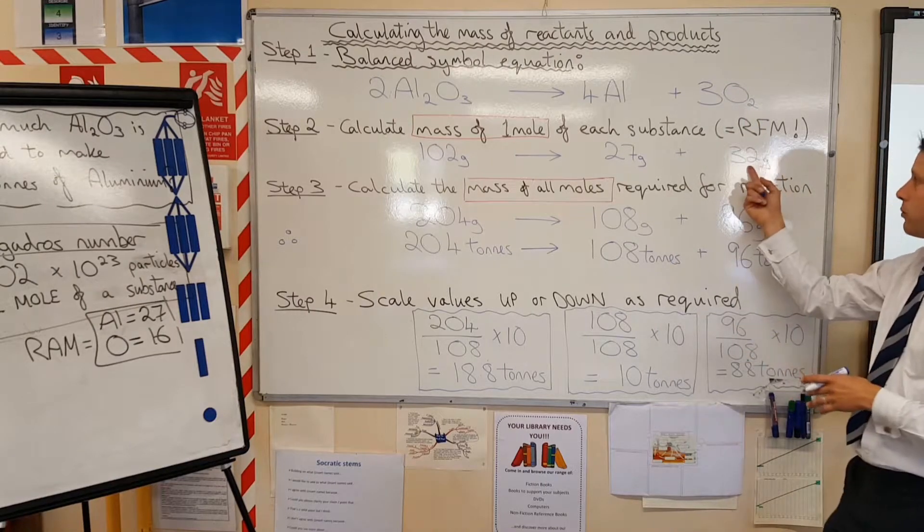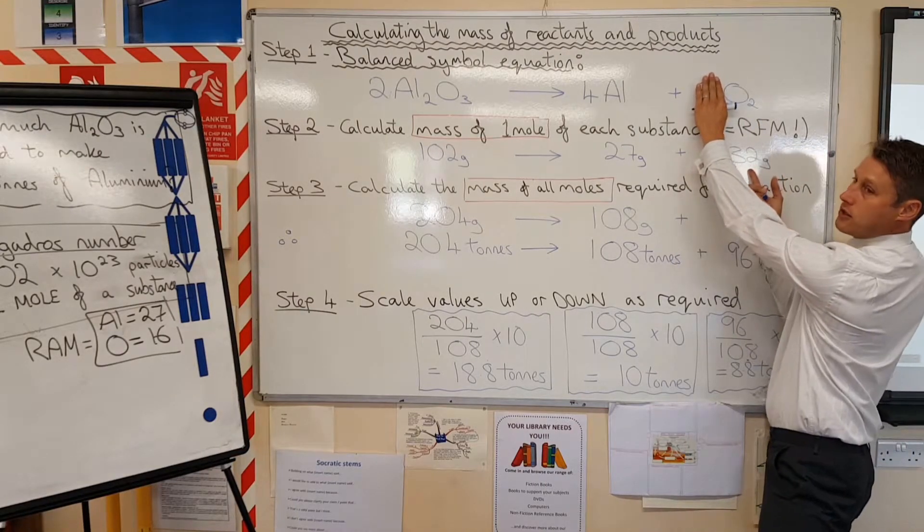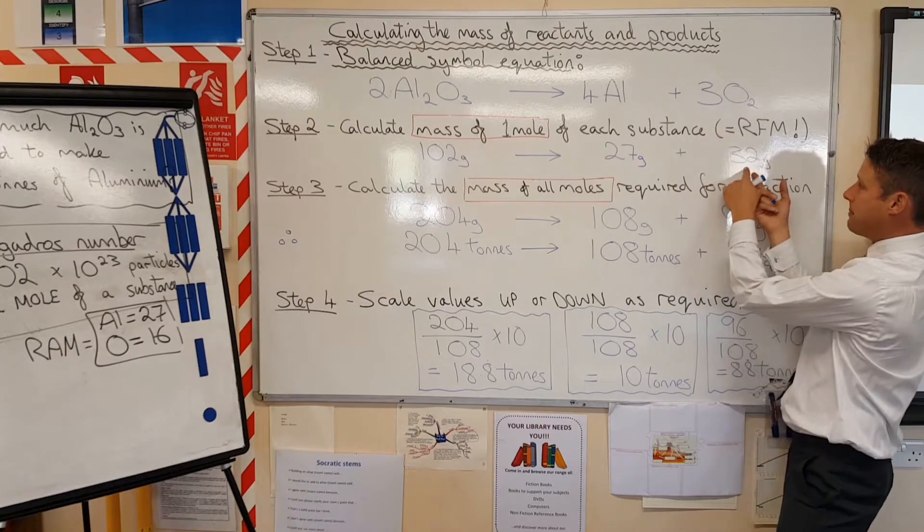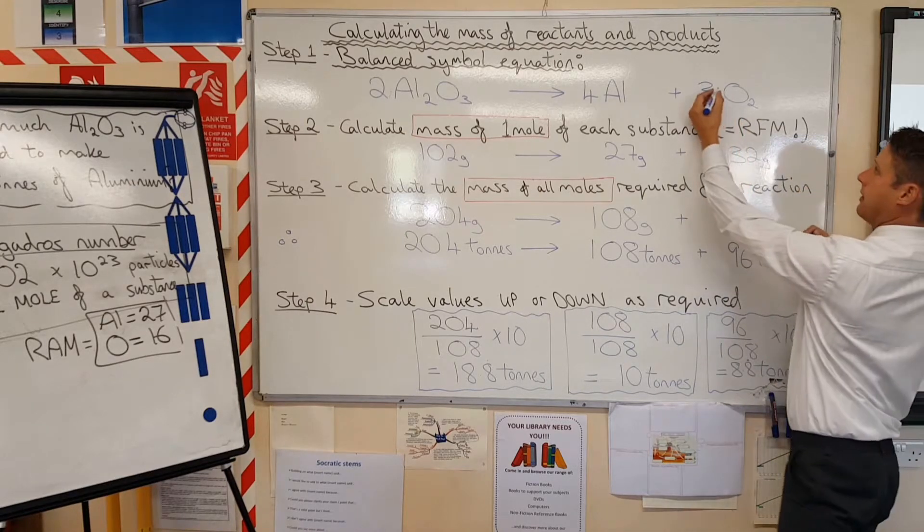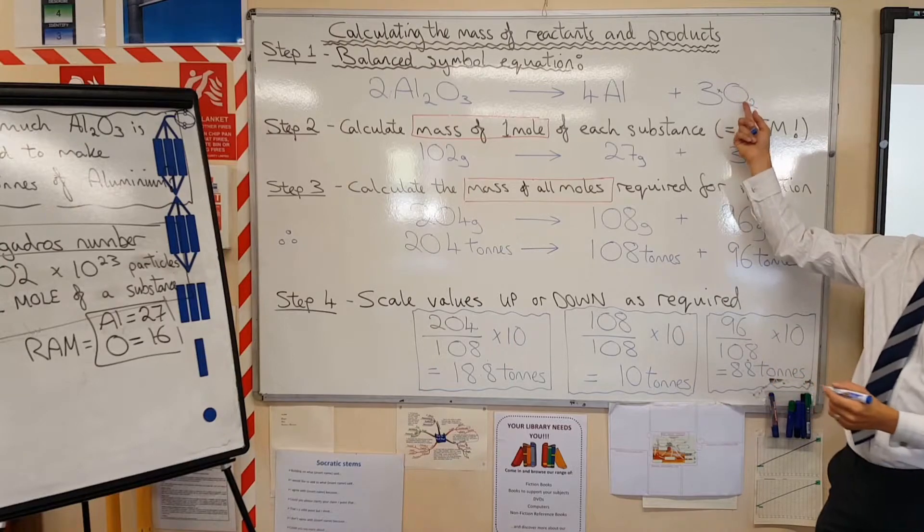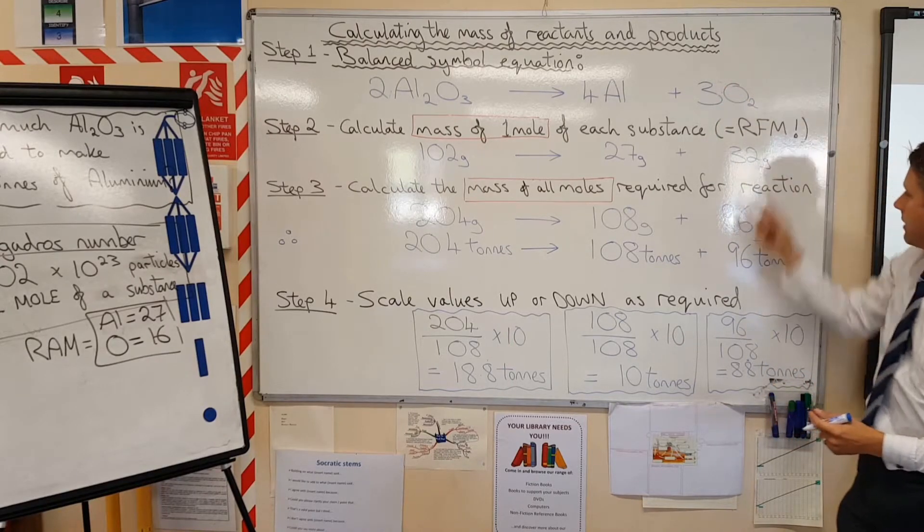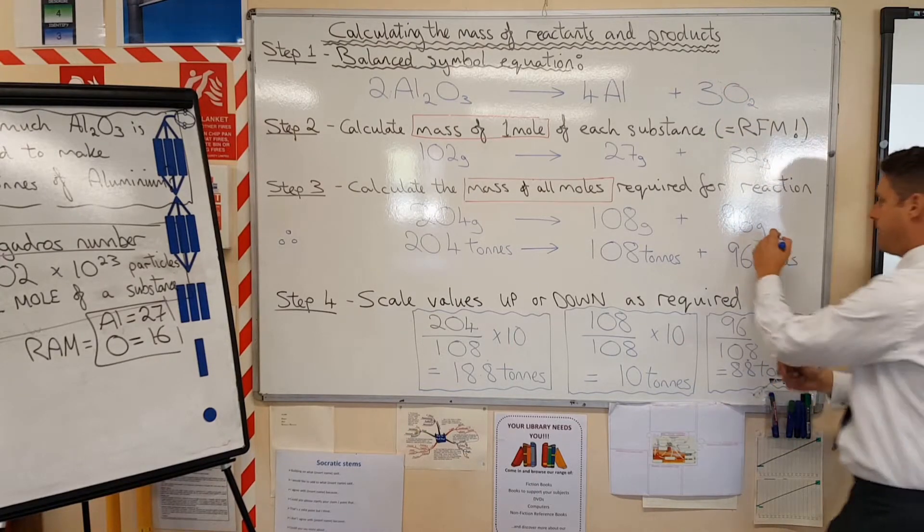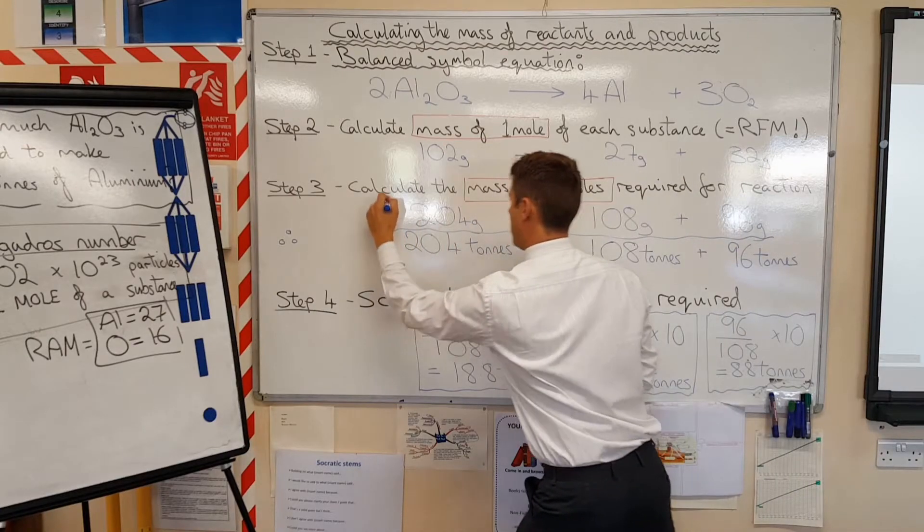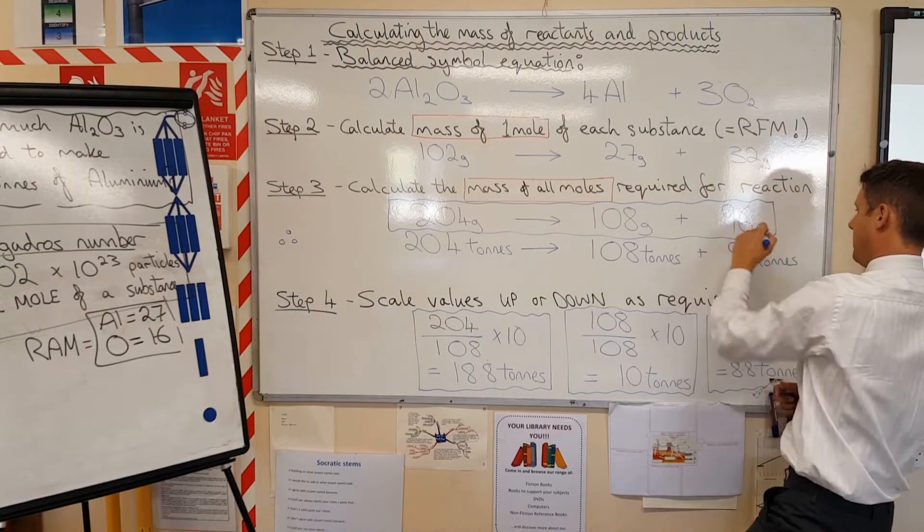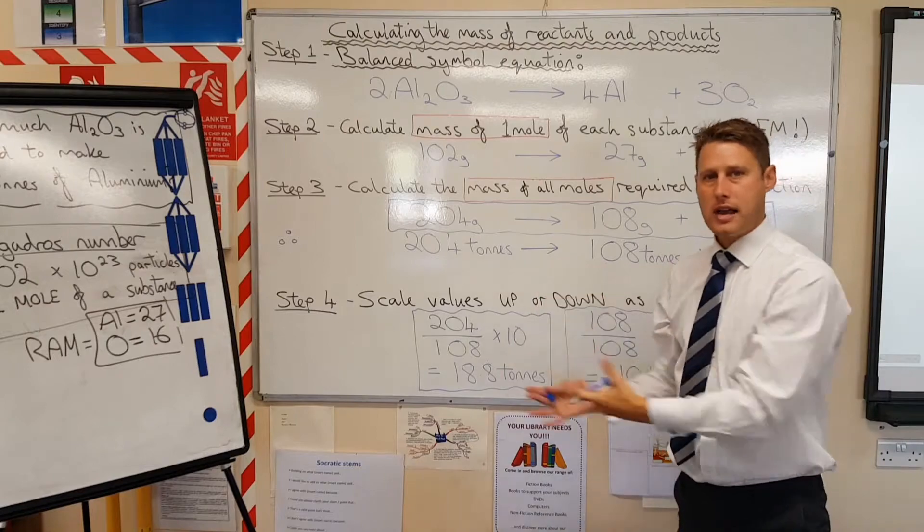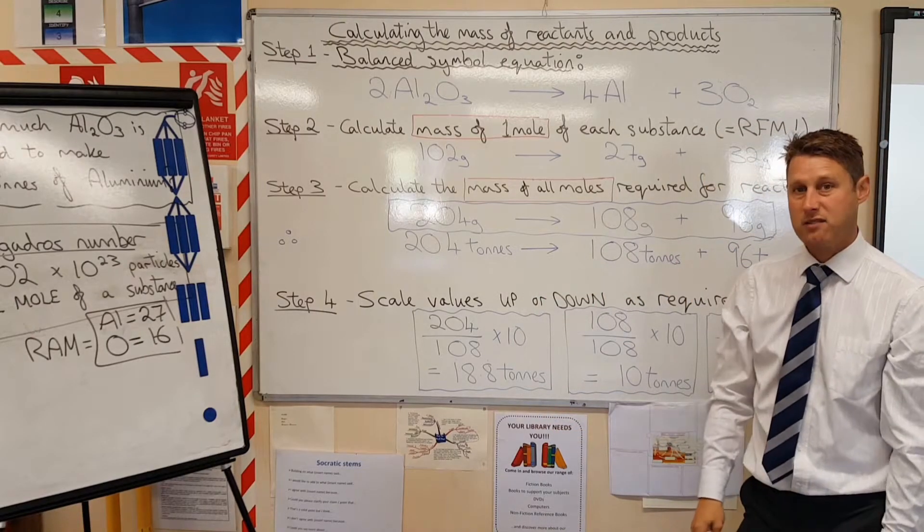Oxygen, we know one mole is 32 grams. Three moles, as it says here, three lots of oxygen is going to be 96 grams. Therefore, we've now got the basics in place. You can work out anything from there, really.